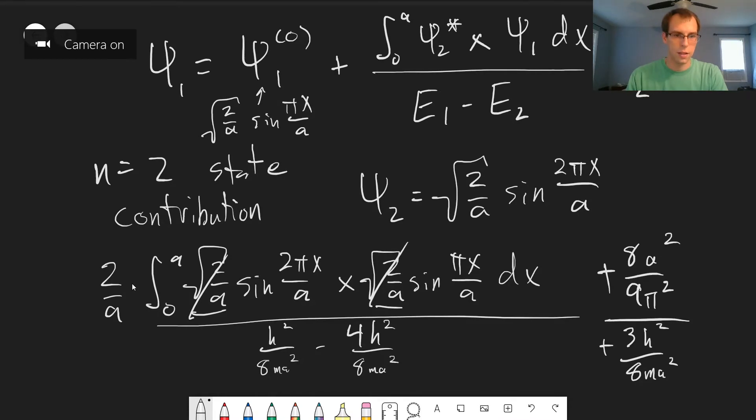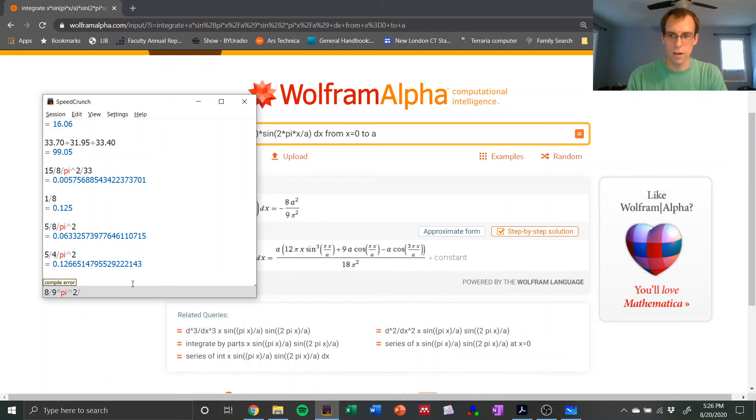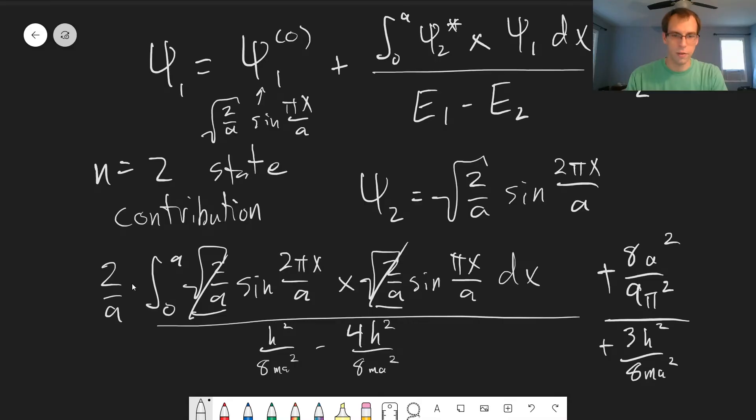And then we'll have divided by 3h². I don't want to actually put in h² though. So it depends on the values of our mass too and things like that. The actual value we're getting is going to matter, but in the end, this is just a number.